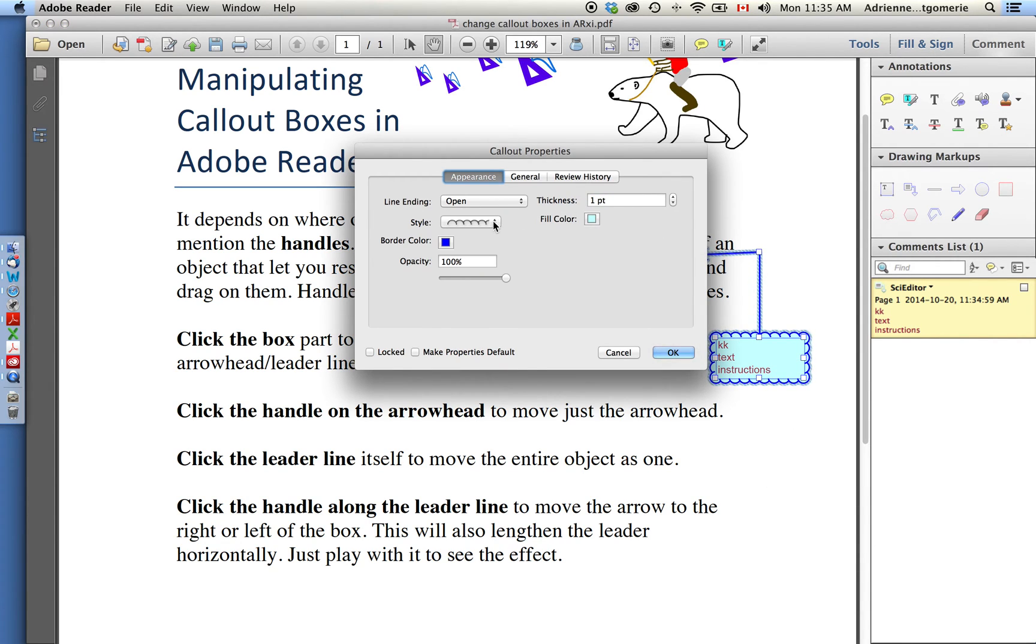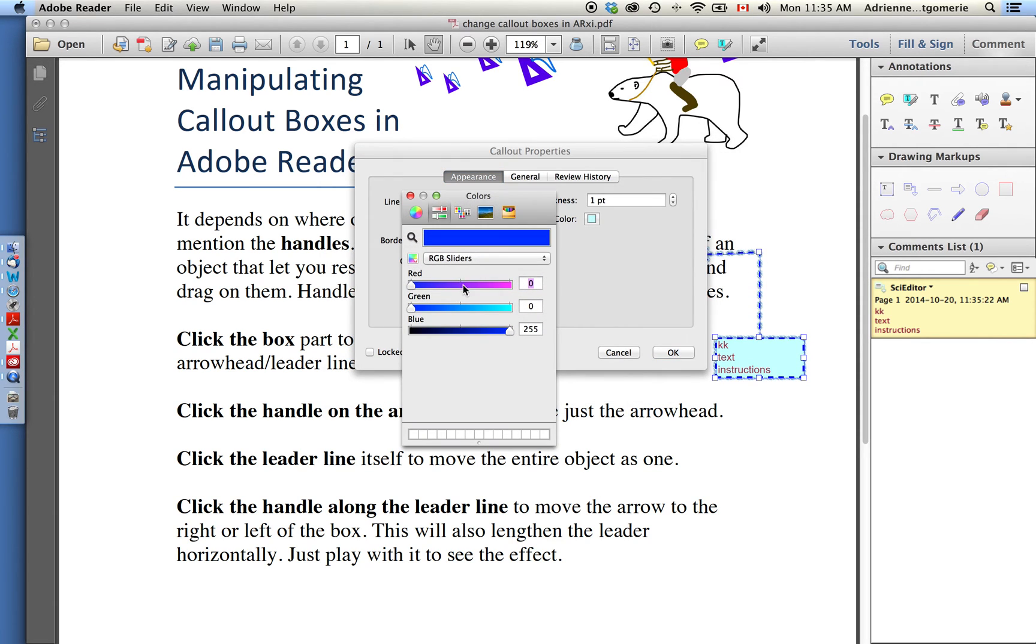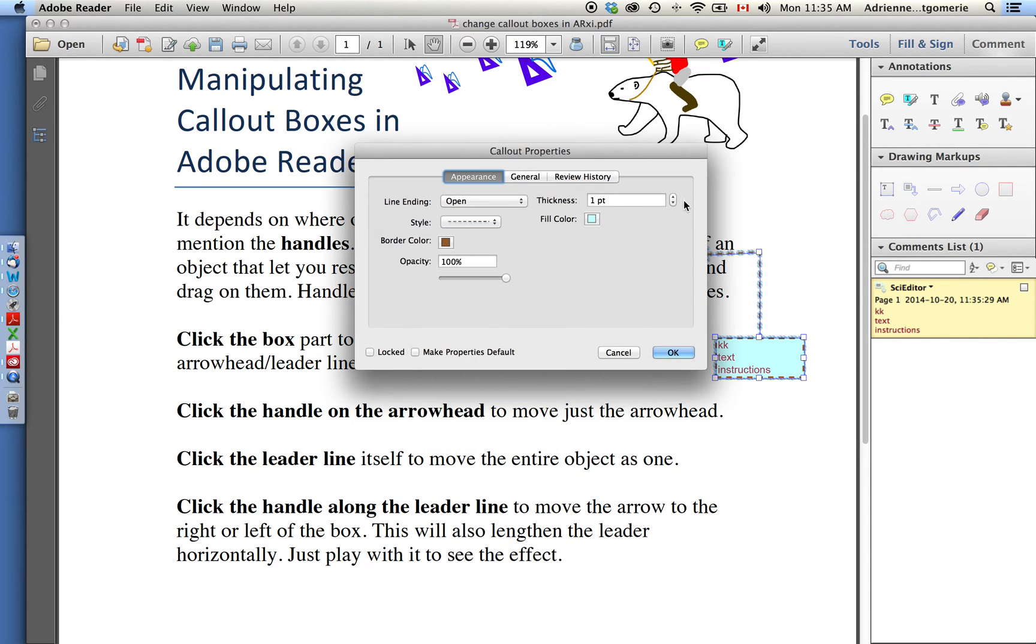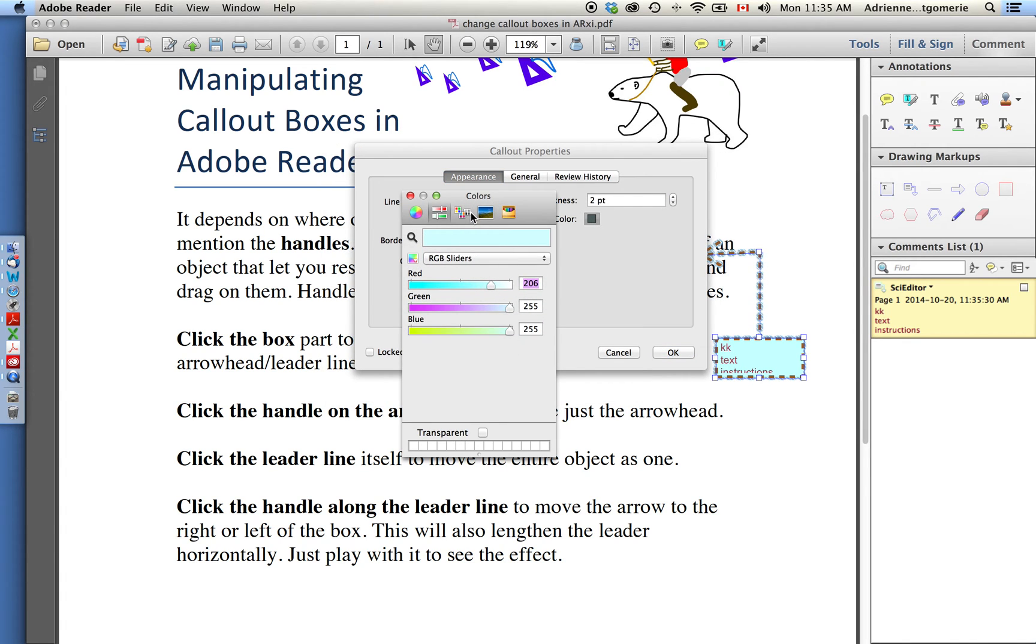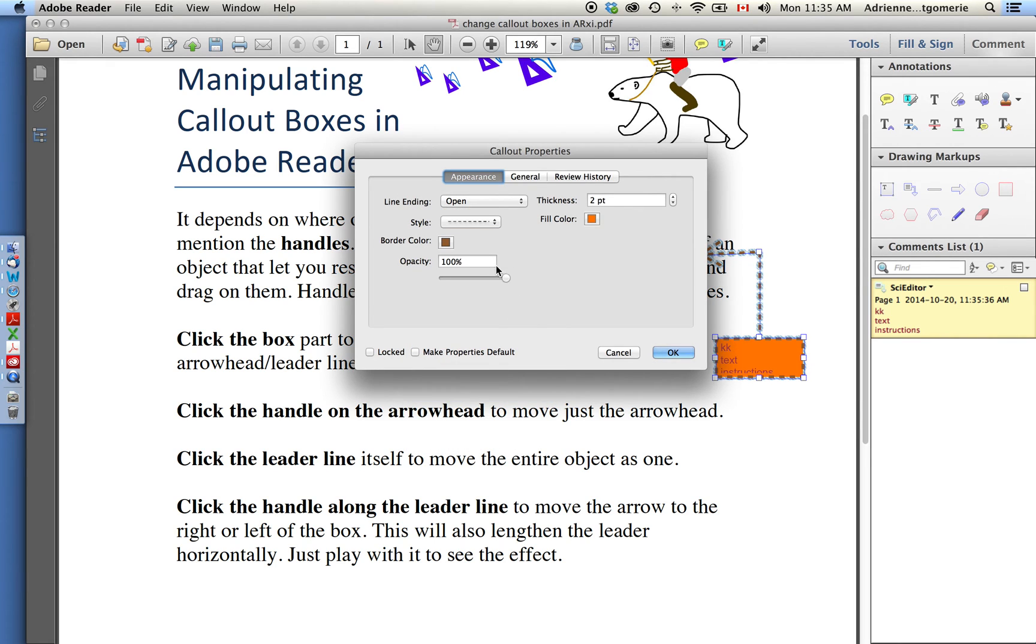From the properties window, I can change the border style, the color—this gets a little more complicated, I find this easier—the thickness of my line, the fill color, and even the opacity.